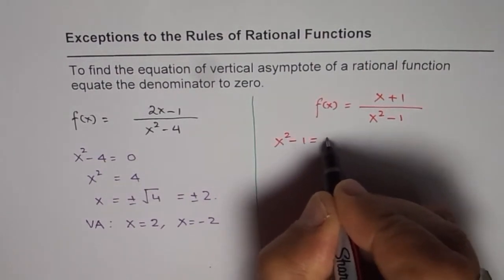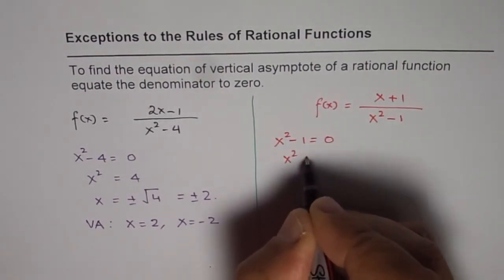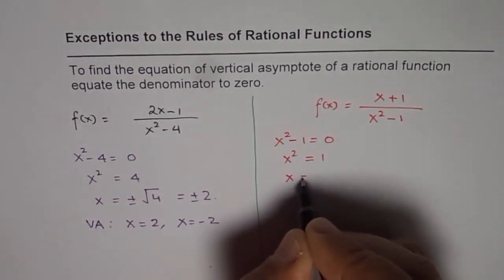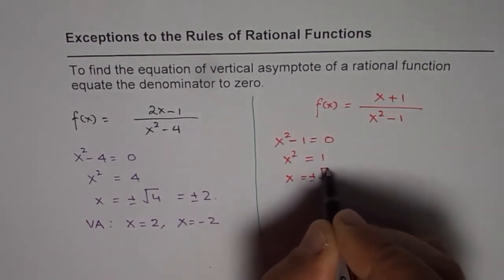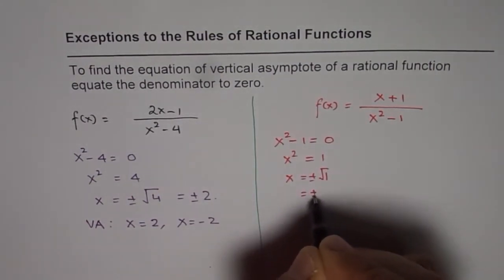I will get x squared minus 1 equals 0. So, x squared equals 1, x equals plus minus square root of 1, that is equals to plus minus 1.